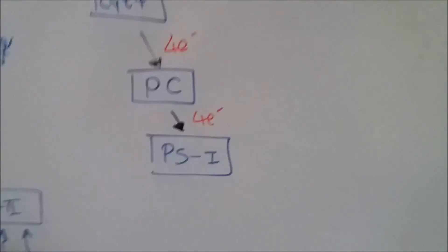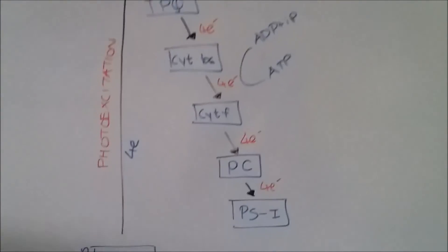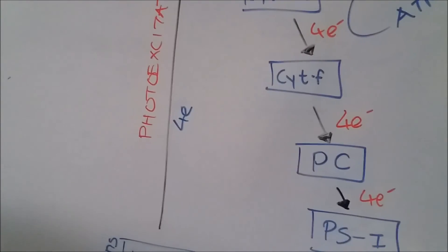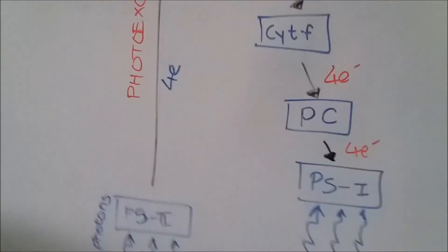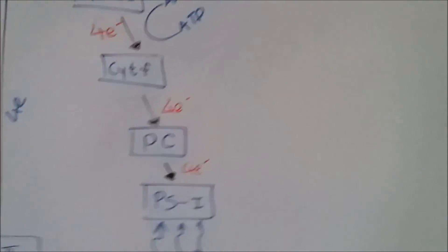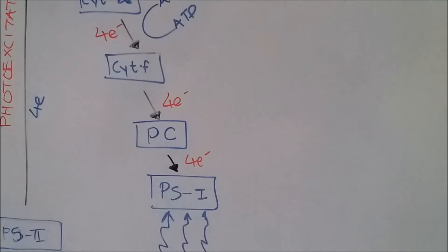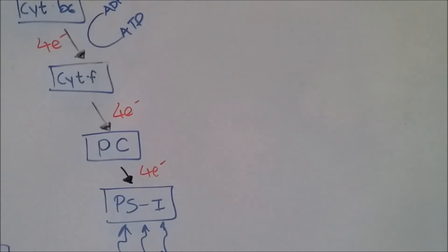Now this is not complete yet. What will happen again is light will be incident on PS1 center. Light incident on PS1 center will make this center excited, which will cause this energy to expel some amount of electrons.